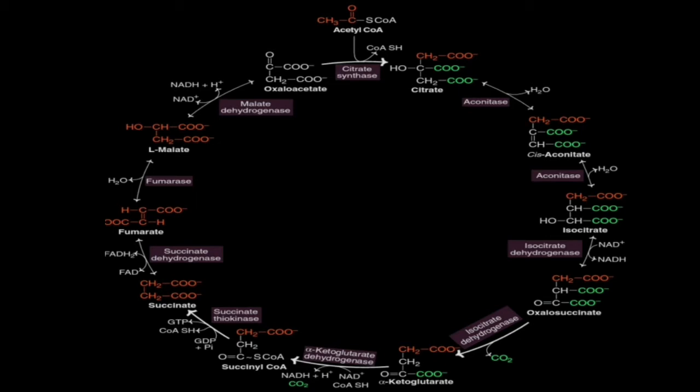Alpha-ketoglutarate undergoes oxidation by the enzyme alpha-ketoglutarate dehydrogenase, which leads to formation of succinyl-CoA. During this reaction, NAD is reduced to NADH and one more carbon is removed as CO2. Together, the reactions catalyzed by isocitrate dehydrogenase and alpha-ketoglutarate dehydrogenase remove the two carbons of acetyl-CoA.